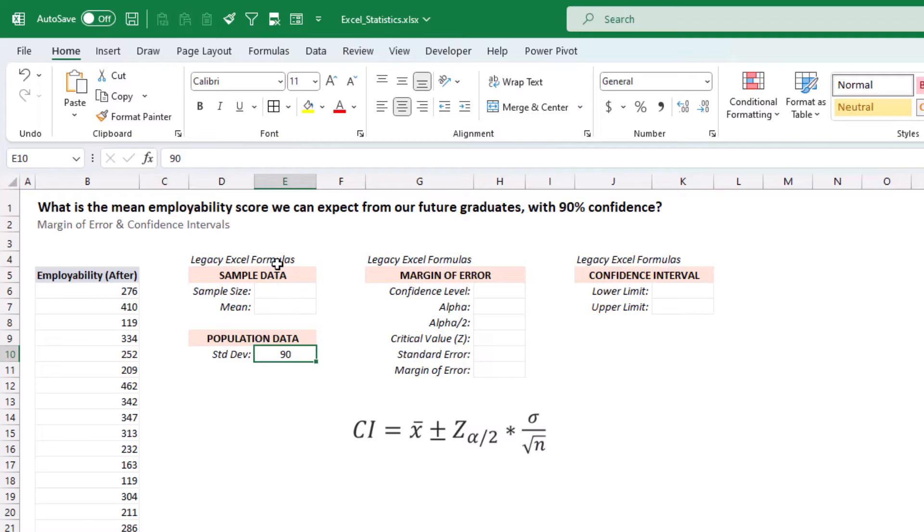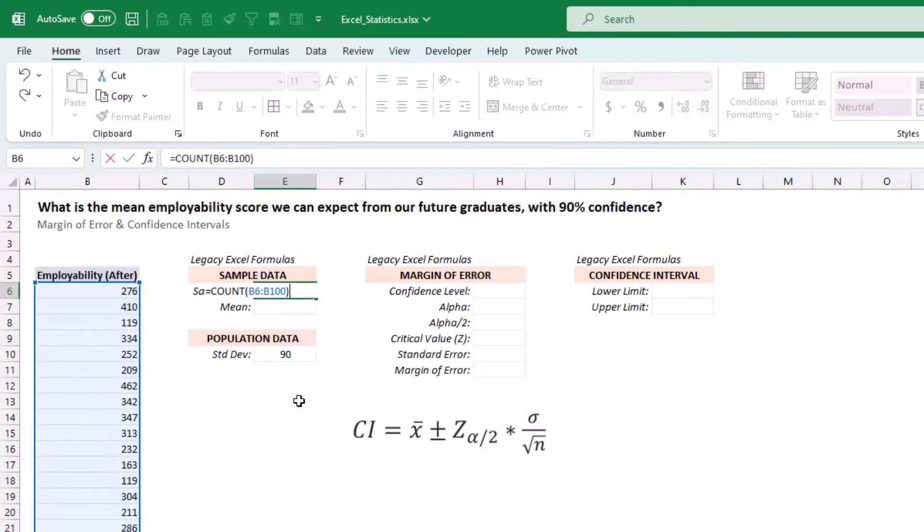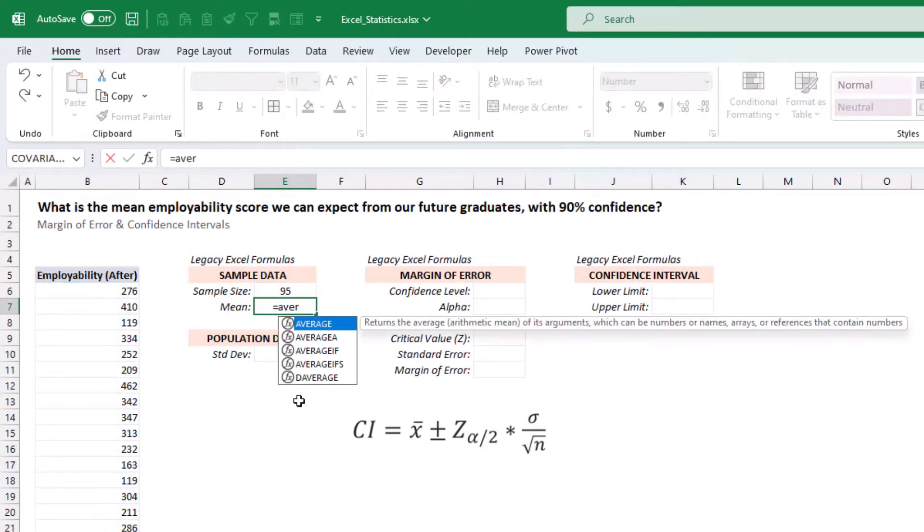So let's calculate our sample statistics to begin. For the sample size, we can use a count. And for the mean, we can use the average function.